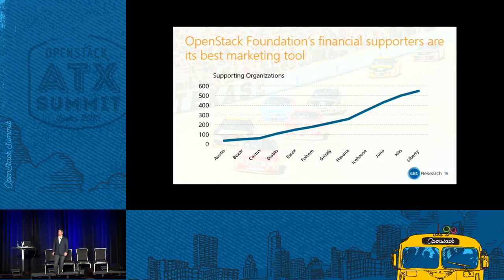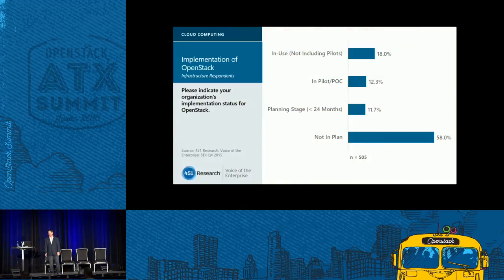Major IT vendors see their competitors getting involved, so they want to be involved too — a snowball effect. This marketing capability based on financial supporters is one of the best things for OpenStack. You name the major IT vendor with over a billion in revenue, they're pretty much represented here at OpenStack nowadays, except for Microsoft — but maybe within the next year or so.